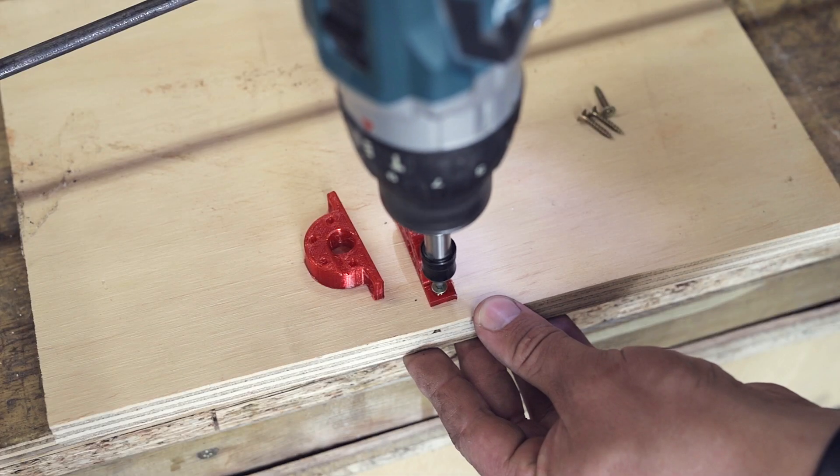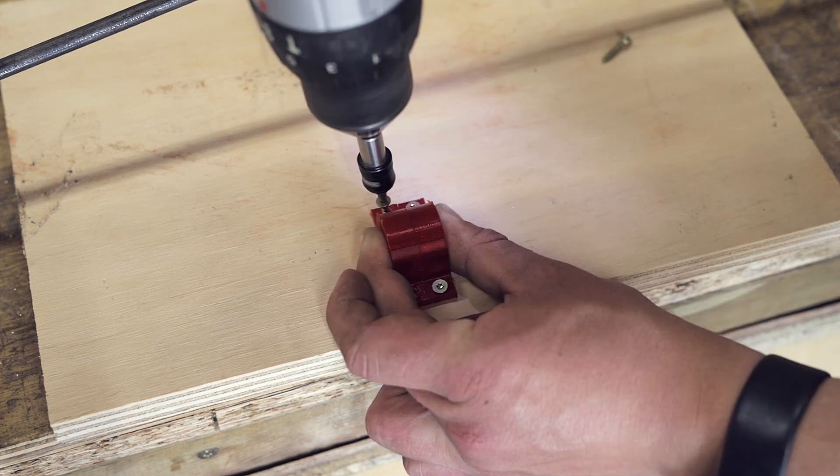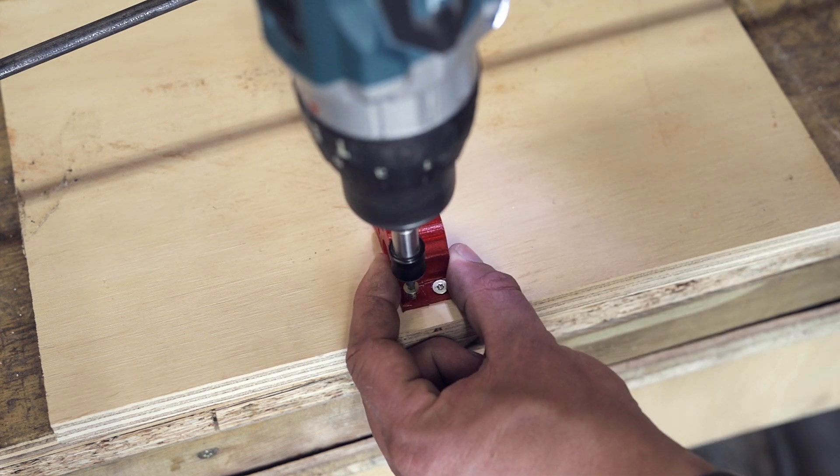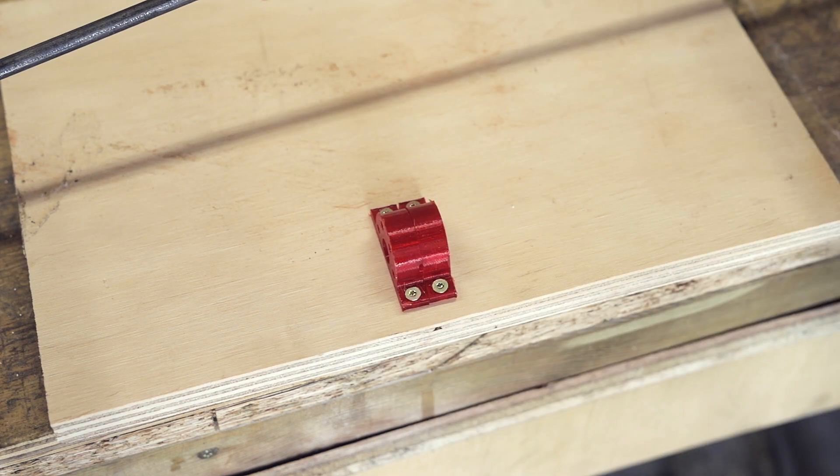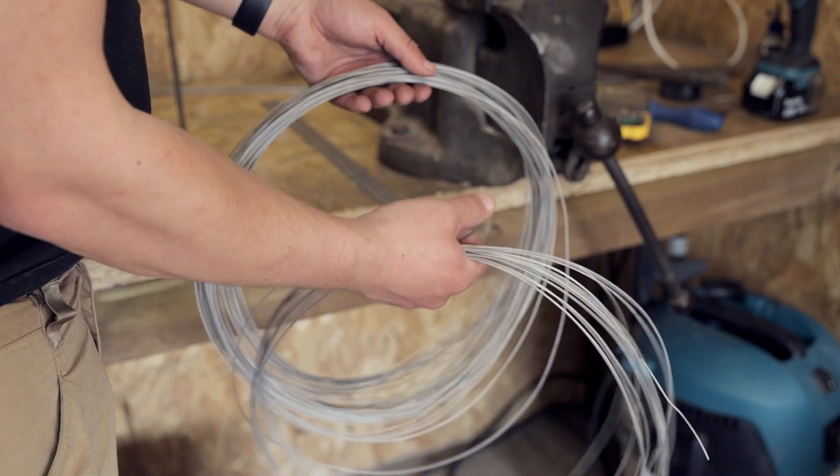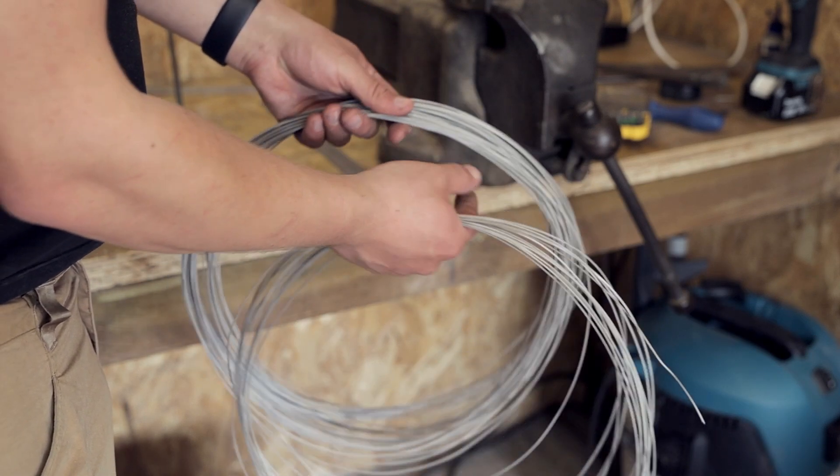Here you see the 3D printed jig being screwed into a piece of wood, which can be mounted to my working table. The 50 meters of kanthal wire is then split into two equal lengths for each of the heating elements to be made.